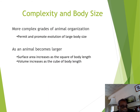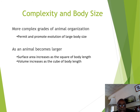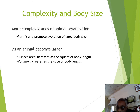One other thing to talk about is the idea of how complexity is related to body size. If we look at the trend in animal evolution over time, we can see that the average animal tends to get larger and larger as it moves from a simpler form of cellular organization to a much more complex form of organ system organization.